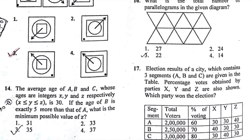This one says average age of A, B, and C whose ages are integers X, Y, and Z respectively is 30. The age of B is exactly 5 more than A. What is minimum possible age of Z? I solved this and got 35. X will be 25 years old, Y will be 30 years old, and Z will be 35 years old. They were asking about that, so it will be 35 years.